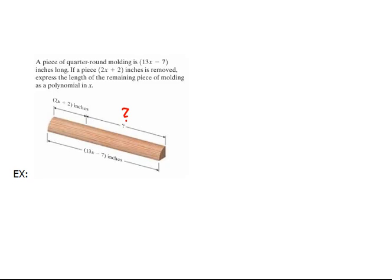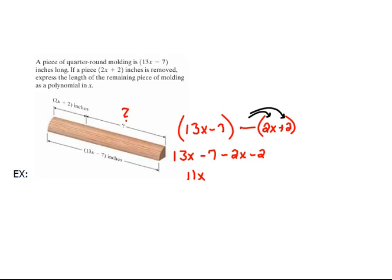When we remove something, that's a subtraction. So we need to write this as taking the full length of molding, which is 13x minus 7, and we're going to subtract off that part we're taking out, which is 2x plus 2. And because we're subtracting, we do have to distribute. So that becomes 13x minus 7 minus 2x minus 2. And now we collect like terms. 13x and negative 2x would be 11x. And then negative 7 and negative 2 would be negative 9. This is the size of the piece that's missing.